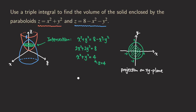Regarding setting up the integral, we need to think about which coordinate system to use — rectangular, cylindrical, or spherical. We can look at the projection region, and since it is a circular disk, we should use cylindrical coordinates to set up our triple integral.